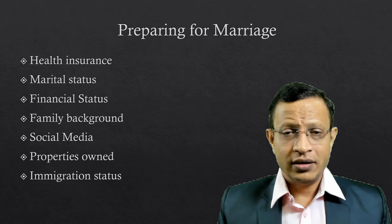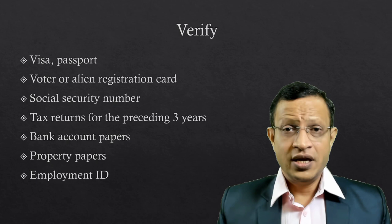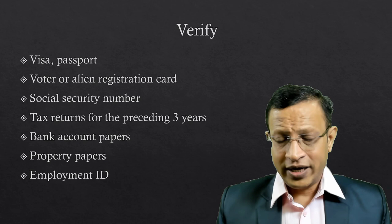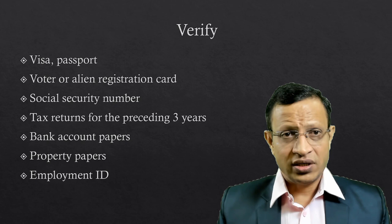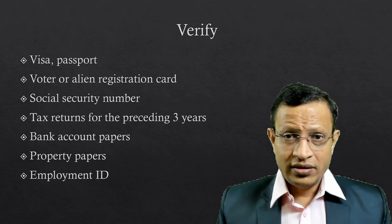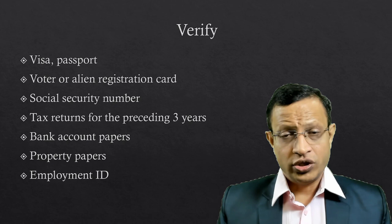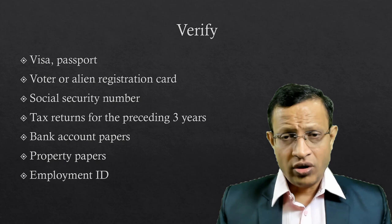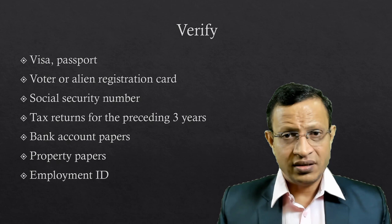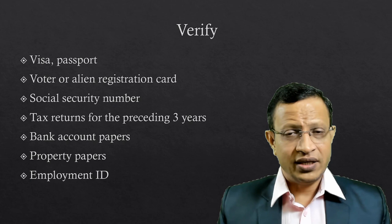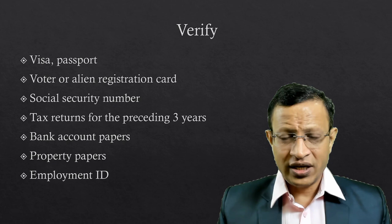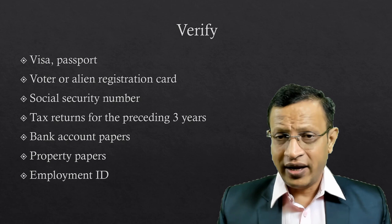You need to verify: check for the visa and passport of the person you are going to marry, especially a foreign national, NRI, or OCI. Check voter status, alien registration card, foreign registration card, social security number, and tax returns for at least three years — so you know the income of that person. Also check bank account papers, property papers, employment ID, which company they work for, and how many years they have been working. If you can collect and collaterally verify this information, you are on the right track.